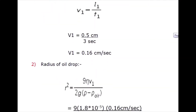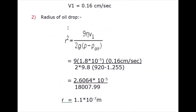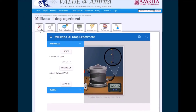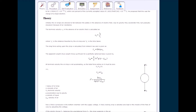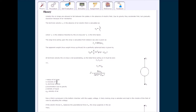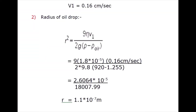Now we will calculate the radius of the oil drop. The formula is: r² = (9·η·v1) / (2·g·(ρ - ρ_air)). Here r is the radius of the oil drop, η is the viscosity of air, v1 is the terminal velocity, g is acceleration due to gravity, ρ is the density of the oil, and ρ_air is the density of air.